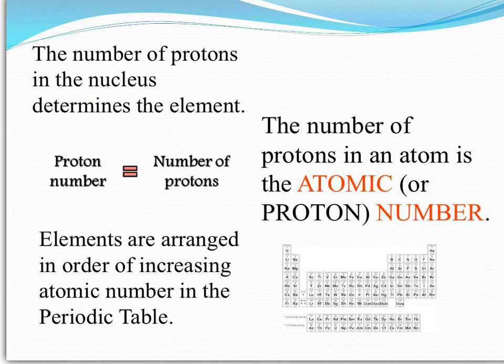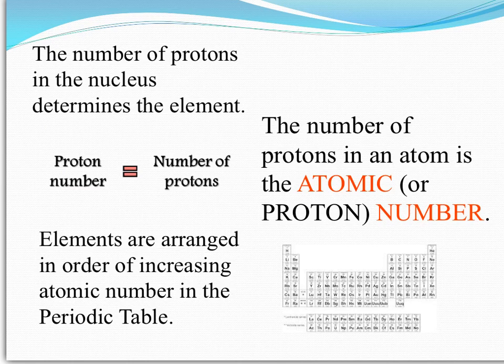The number of protons in the nucleus of an atom determines which element we actually have. So for instance every atom with six protons must be a carbon atom, every atom with eleven protons must be a sodium atom and so on. The number of protons is so important that it is given a special name — the atomic number. This is the basis of how elements are arranged in the periodic table: in order of increasing atomic number.